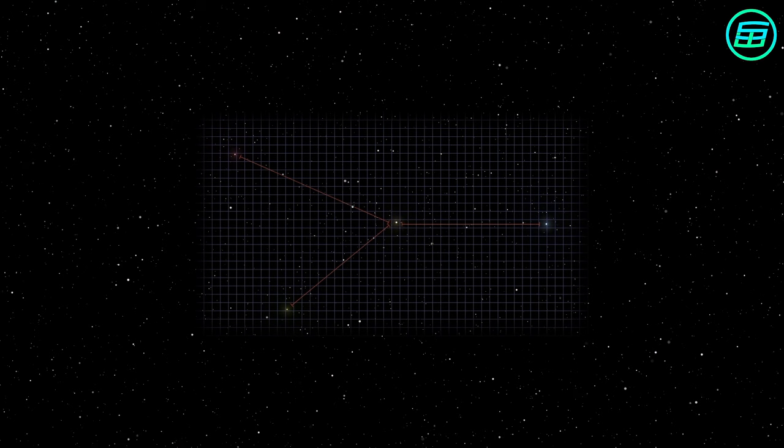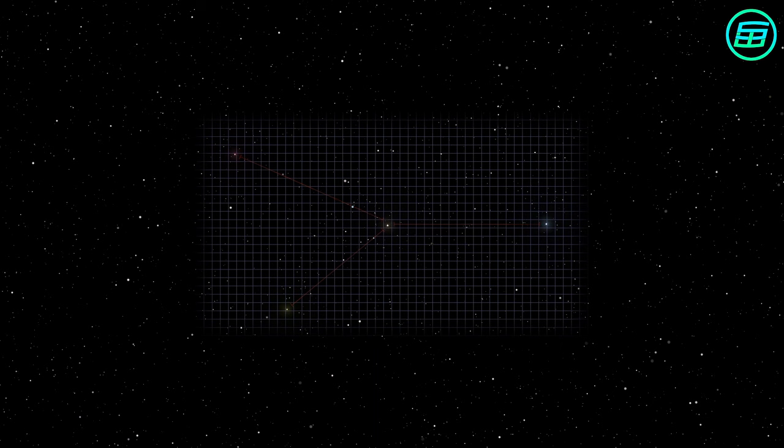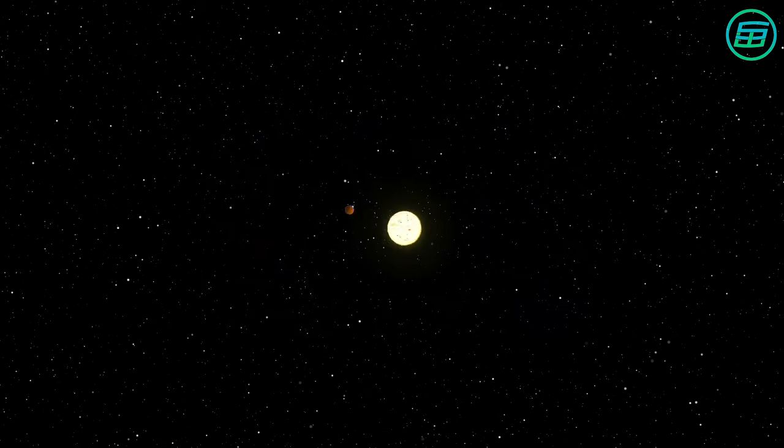Astronomers can use this kind of wobbling motion around a barycentre to detect exoplanets. If they observe a star that's wobbling as it moves along, it's a sure sign that there's at least one unseen object in orbit around it.